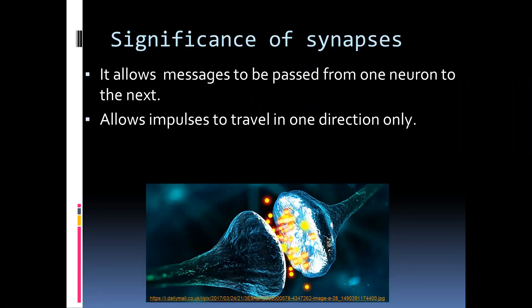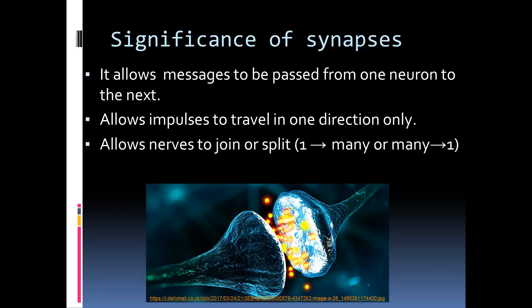Synapses are also important because they ensure that impulses only travel in one direction. At synapses there can also be joining or splitting of many neurons — from one interneuron it can split into maybe five different motor neurons, or many different sensory neurons can join together into one interneuron.